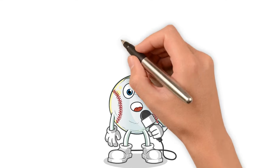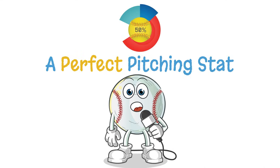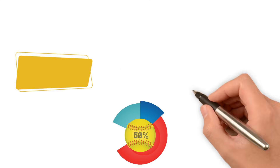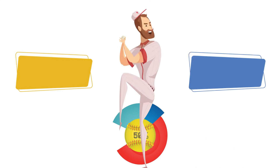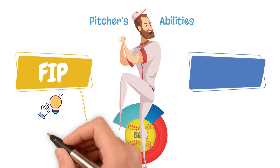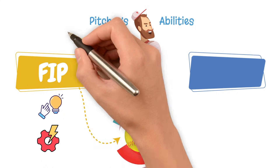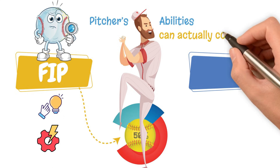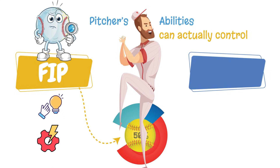There's no such thing as a perfect pitching stat, but some get us a lot closer to the true value of a pitcher's abilities than others. FIP is one of those stats — simple, powerful, and focused on what a pitcher can actually control. But like any stat, it also needs context.